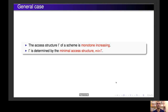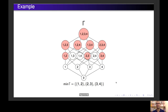Now we'll see some properties of the access structure. The access structure of a scheme is monotone increasing, because if we have an authorized subset, any superset of this subset will also be authorized. Therefore, the access structure is determined by the minimal access structure, which is the family of minimal authorized subsets. In order to describe access structures in this presentation, we'll use figures in which we have the power set of the set of participants and we paint red those subsets that are authorized.